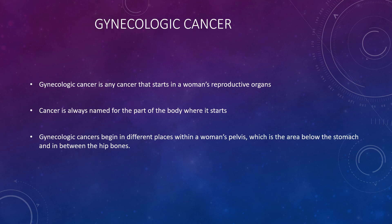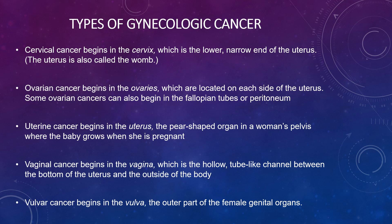Gynaecological cancer refers to any cancer that starts in women's reproductive organs. A cancer is always named for the part of the body where it starts, and these begin in different places in a woman's pelvis — the area below the stomach and between the hip bones. Types include cervical cancer, ovarian cancer, uterine cancer, vaginal cancer, and vulvar cancer, as shown on the slide.